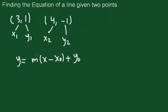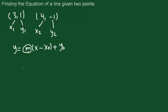First, we'll have to find m, which is the slope of the line. It could be found by y2 minus y1 over x2 minus x1.